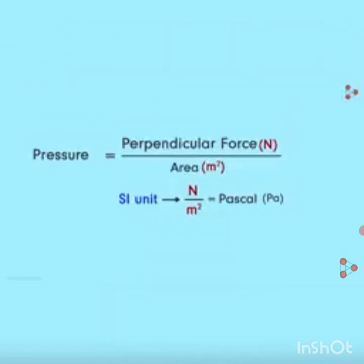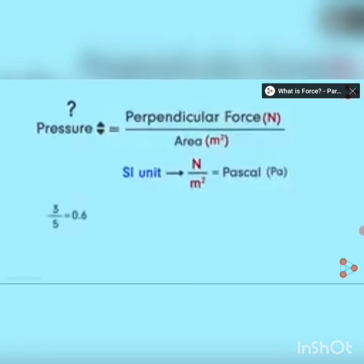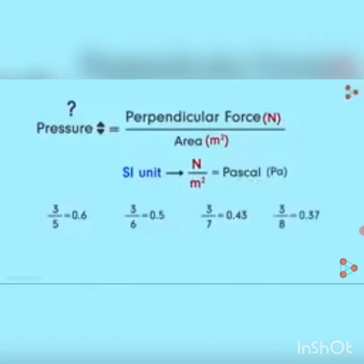Observe the equation carefully. Area is in the denominator of the fraction — the area on which force is applied. If we keep the force constant and keep increasing the area, what happens to pressure? Using mathematical logic: if the numerator is constant and the denominator increases, the fraction decreases. So the pressure will decrease if we increase the area while keeping the force constant.